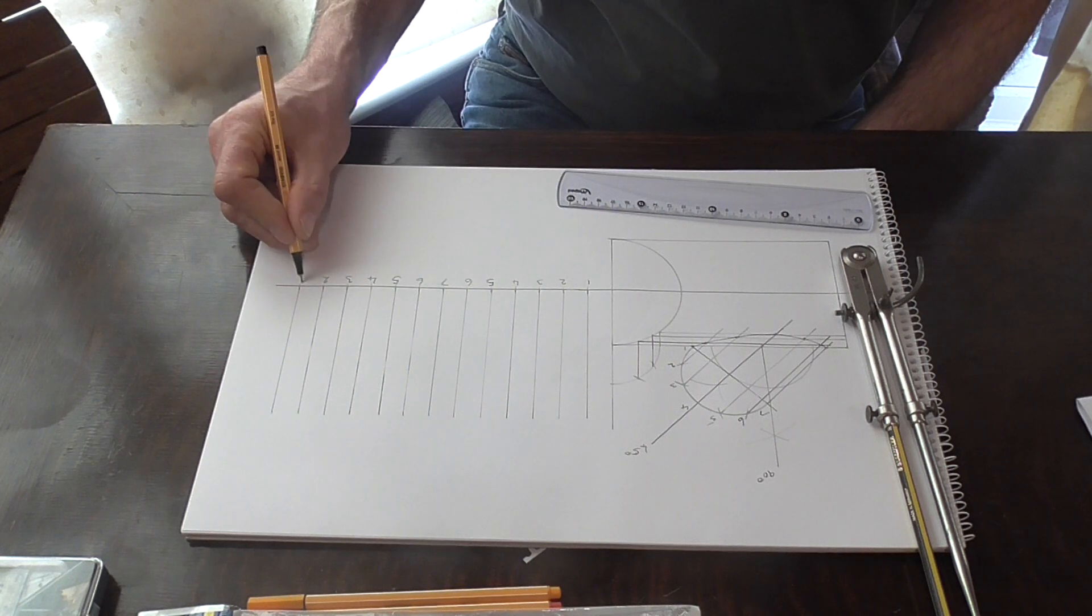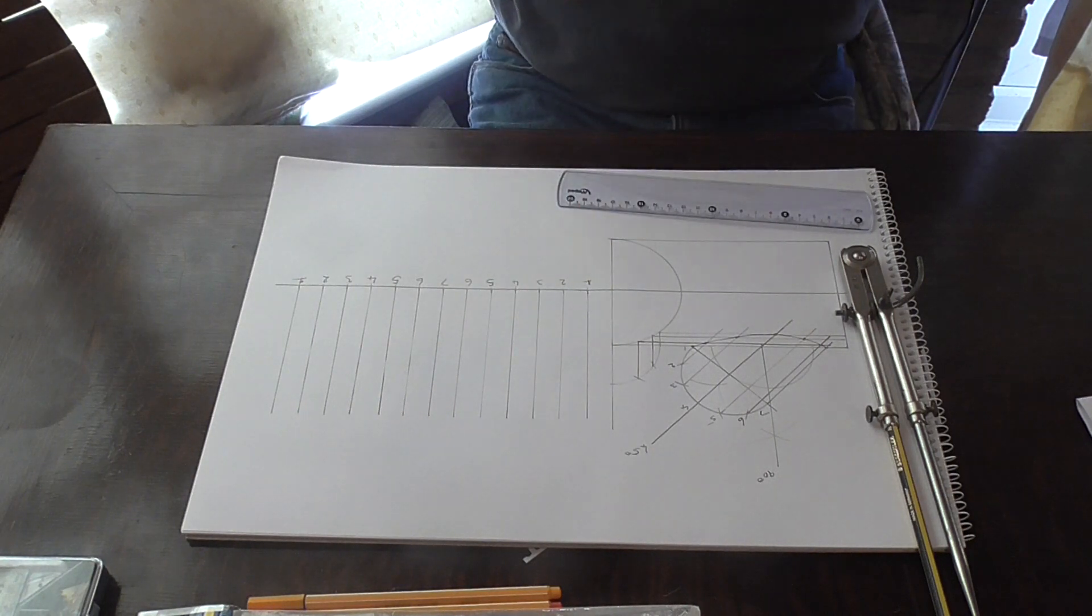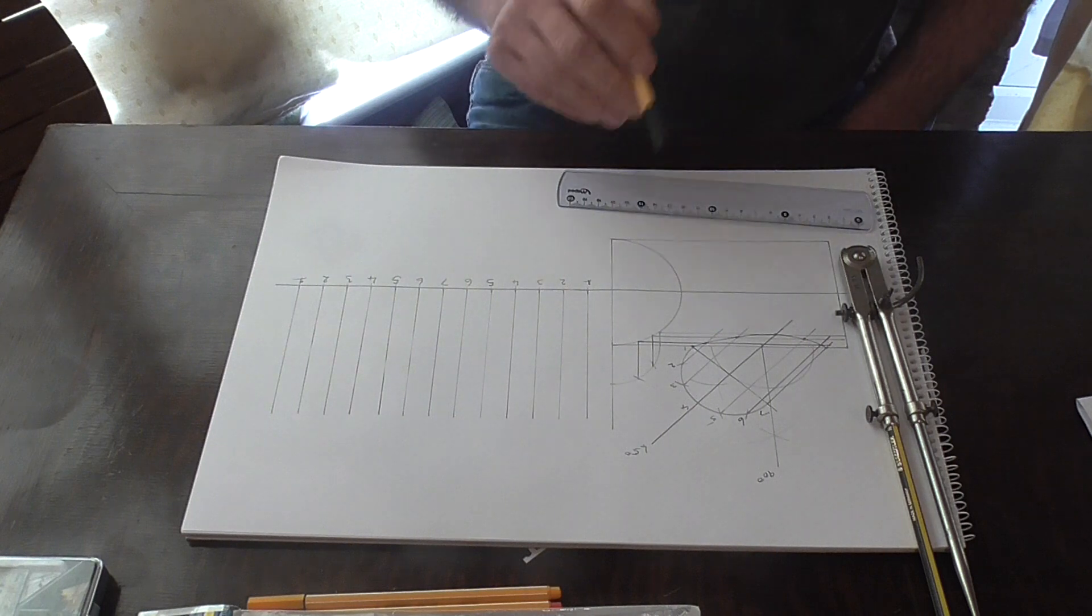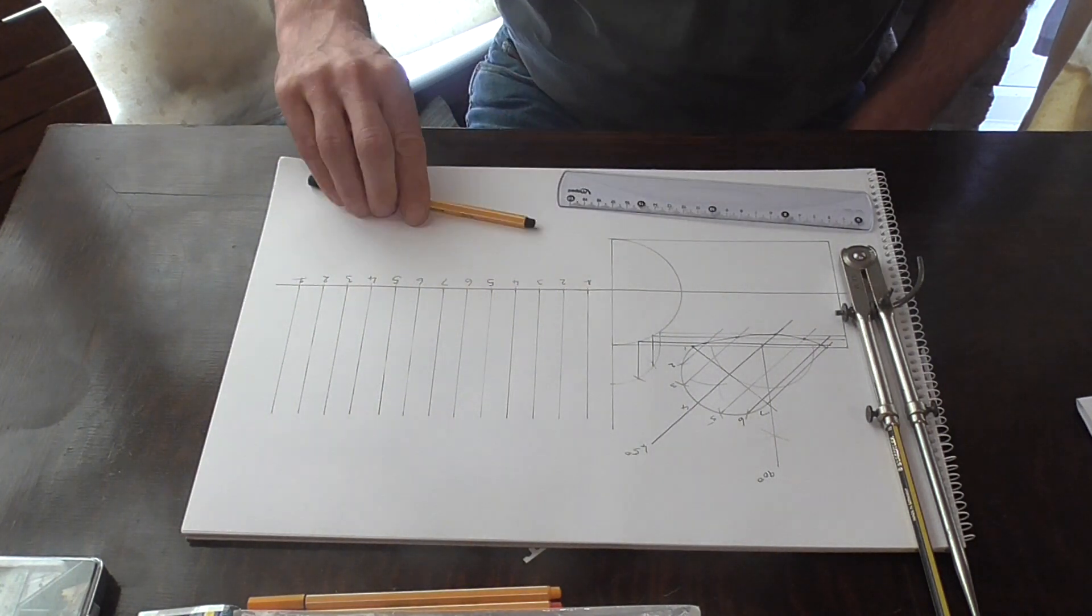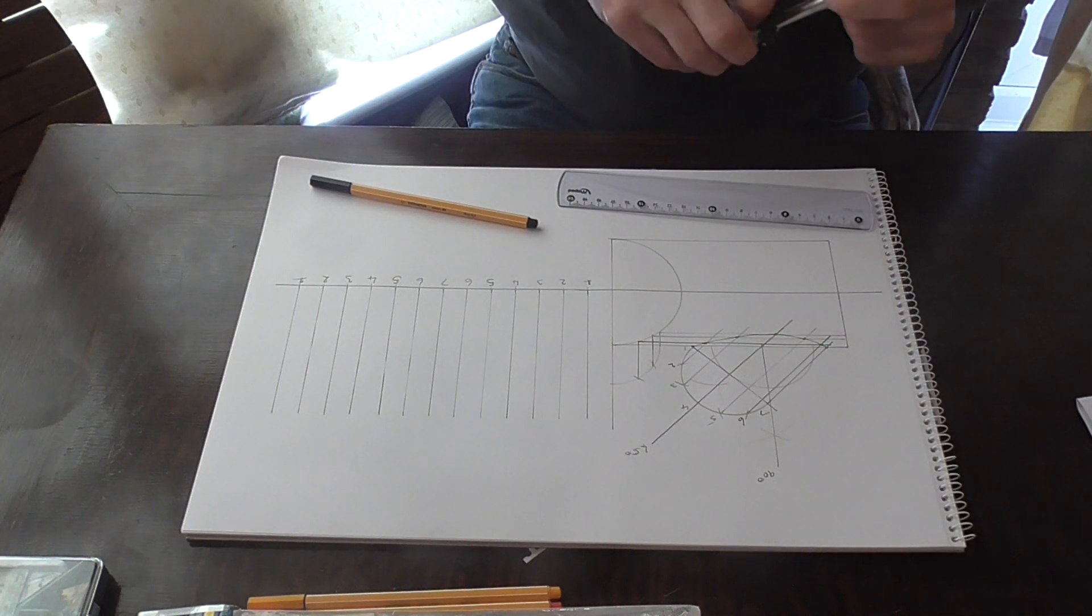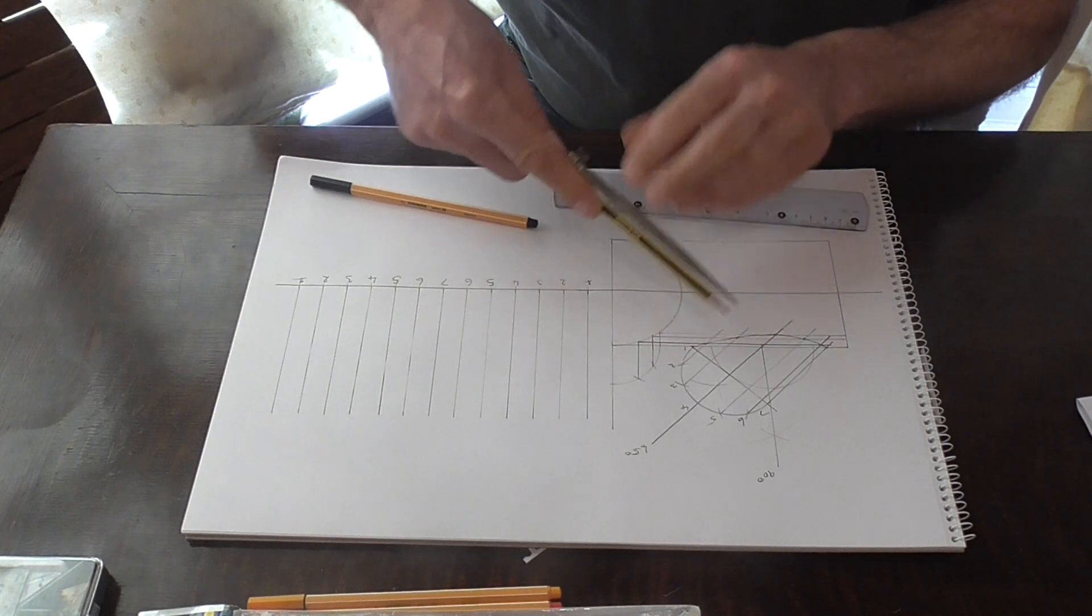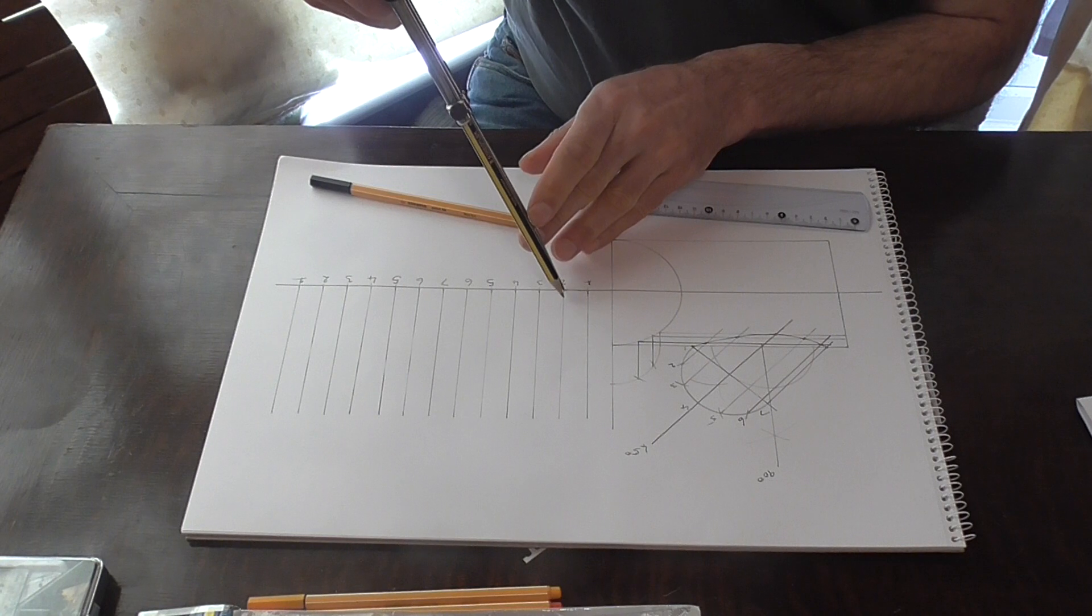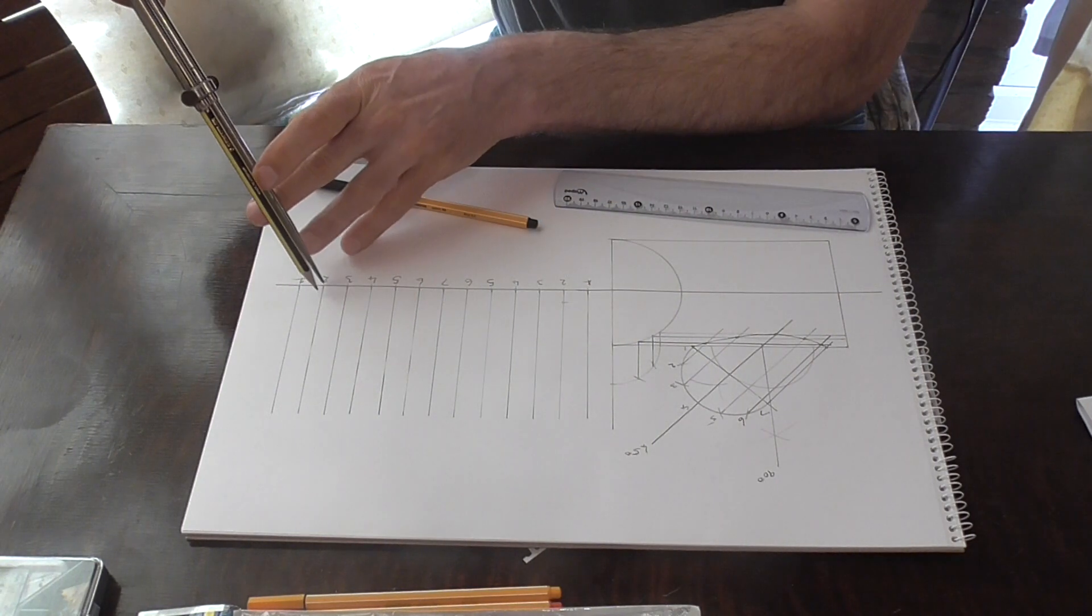So all we need to do now is just draw it out. The 1 positions, they're at 0 so we don't need to worry about them too much at the moment. So we'll just start on number 2, we'll just open our dividers up for that.